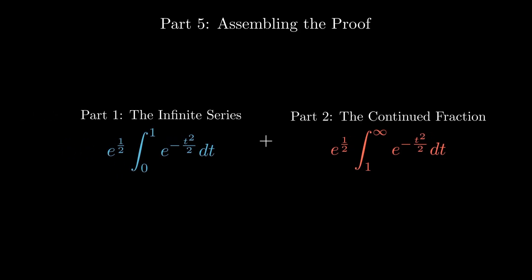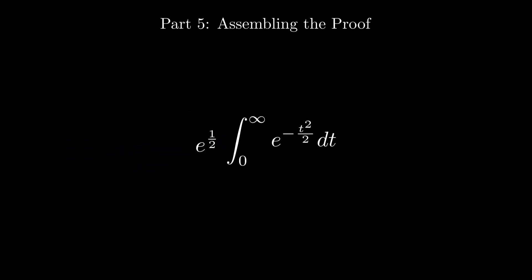Adding both expressions gives us e to the one-half times the full integral from 0 to infinity of e to the negative t squared over 2. And we know that integral equals the square root of pi over 2. So the full expression becomes e to the one-half times square root of pi over 2, which simplifies to the square root of pi e over 2.